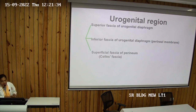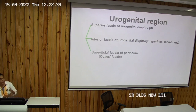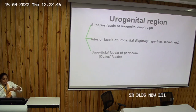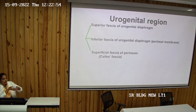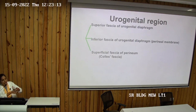The region between the inferior fascia and the Colles' fascia — that is, the superficial fascia of the perineum — forms the superficial perineal space or superficial perineal pouch. The urogenital diaphragm, the urogenital triangle, and the perineal membrane are three different things. The pelvic cavity's floor is called the pelvic diaphragm, formed by the levator ani and coccygeus muscles. The lower fascia of the pelvic diaphragm forms the superior layer of the urogenital diaphragm.